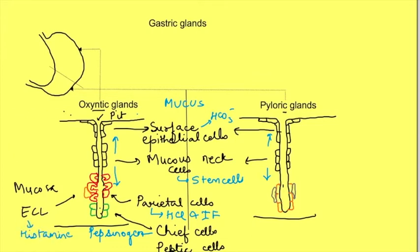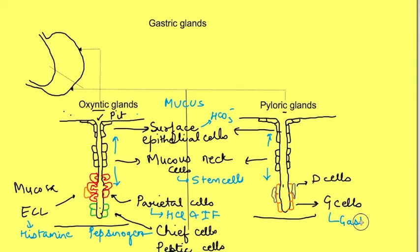As opposed to oxyntic glands, pyloric glands have different cells at the base of the glands — G cells and D cells. G cells secrete gastrin, while D cells secrete somatostatin. These different secretions from oxyntic glands and pyloric glands have different functions. It is important to know these cells and their secretions, as we will see later how they are important for the regulation of hydrochloric acid secretion.